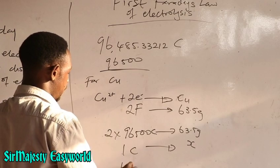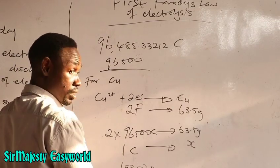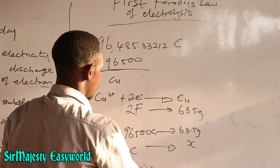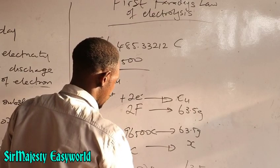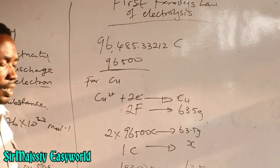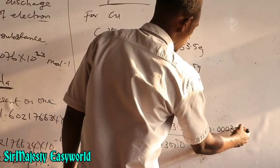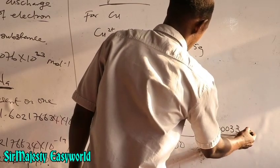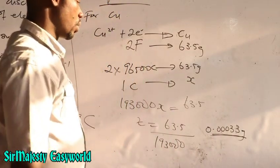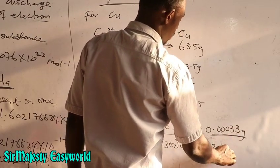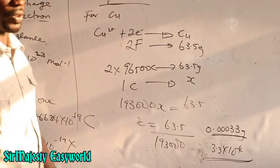So the electrochemical equivalent of copper is approximately 0.0003290 grams, or 3.3 × 10⁻⁴ grams per coulomb. To apply this in solving a problem: what mass of copper is discharged when a current of 0.37 amperes is allowed to flow through molten copper(II) sulfate for 45 minutes?